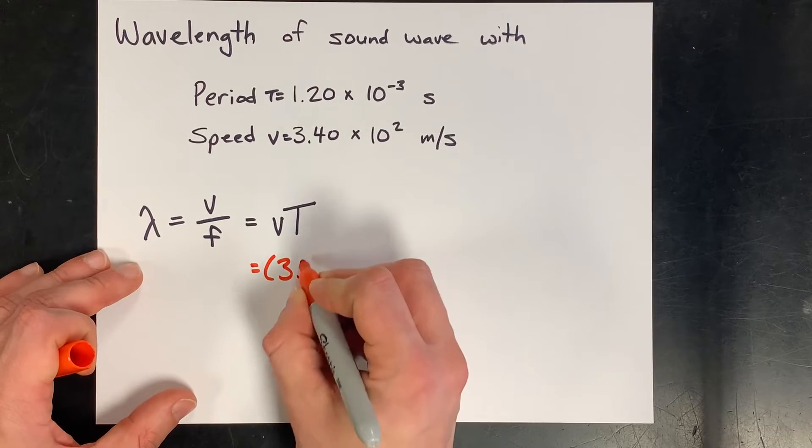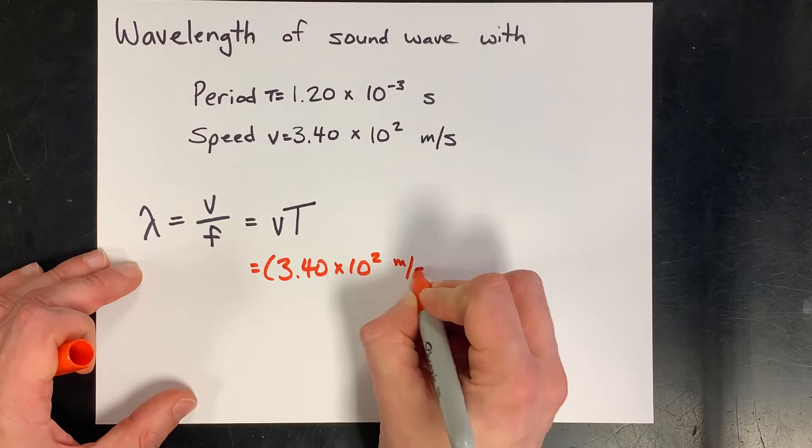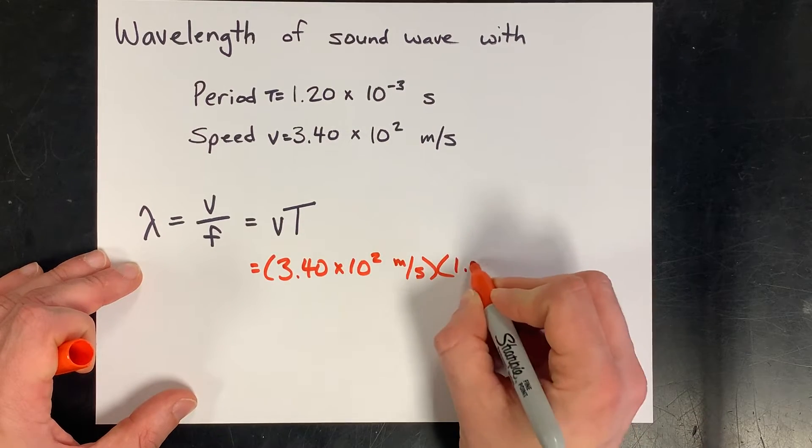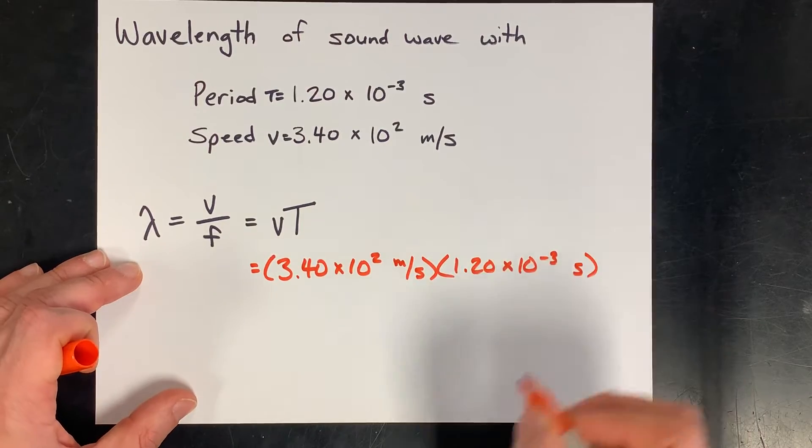That's going to be it. Our speed is 3.40 times 10 to the power of 2 meters per second. Our period is 1.20 times 10 to the negative 3 seconds.